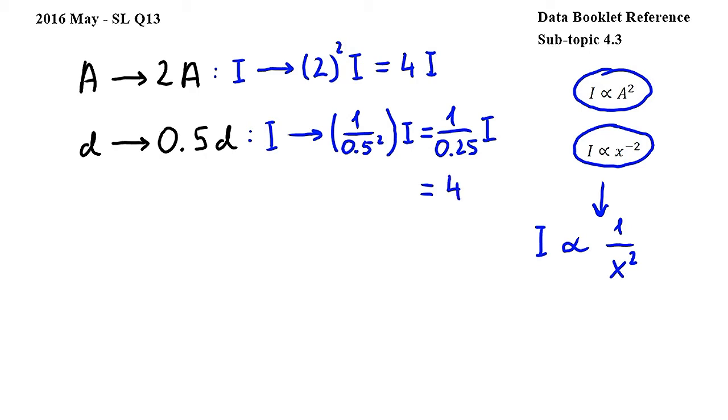So we get 4I for the new intensity. Since the amplitude change changes I into 4I, and the distance change also changes I into 4I, their combined effect will mean that the intensity will be 4 times 4 times the original intensity, which is 16I, therefore the answer to this question is A.